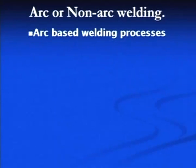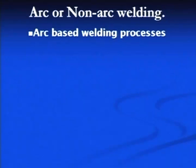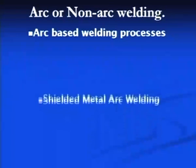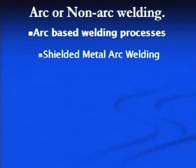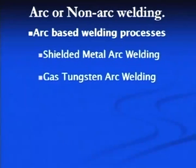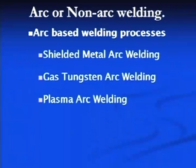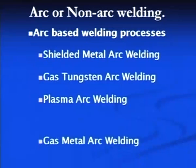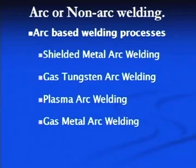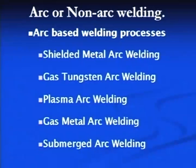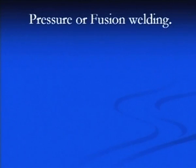Arc welding processes are those in which an electric arc is used to generate heat for producing the weld joint by melting the faying surfaces or filler metal. Examples include shielded metal arc welding, gas tungsten arc welding, plasma arc welding, gas metal arc welding, and submerged arc welding.